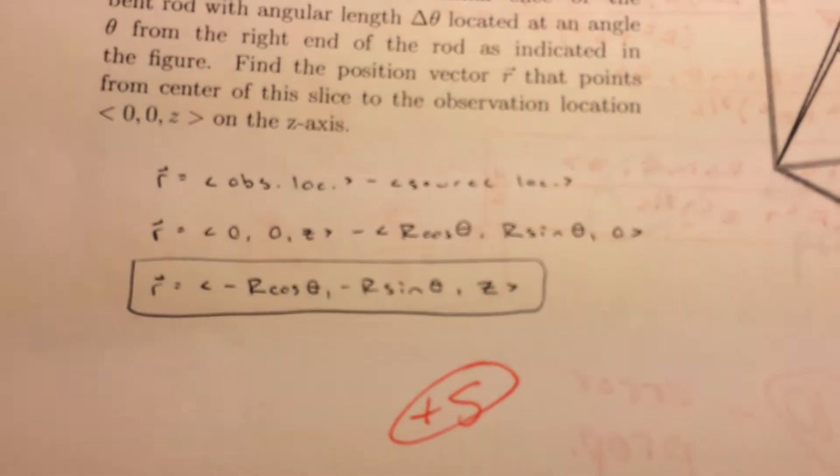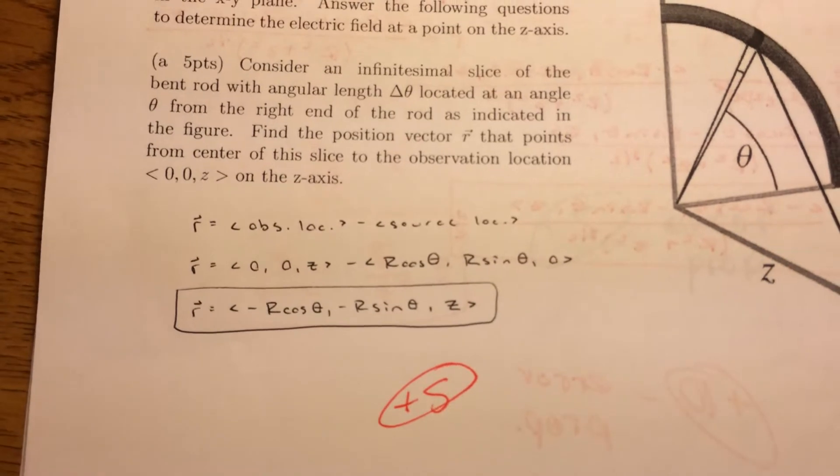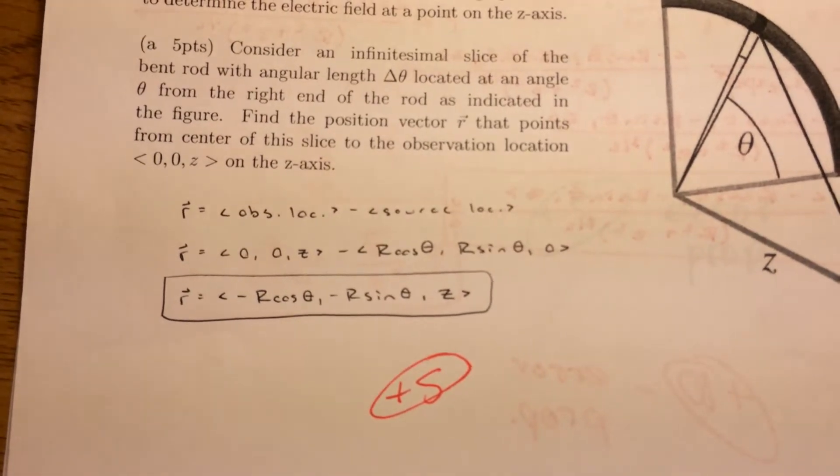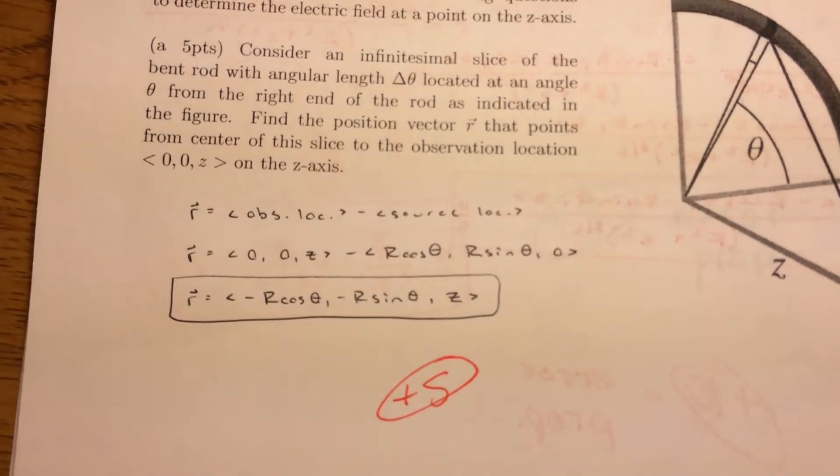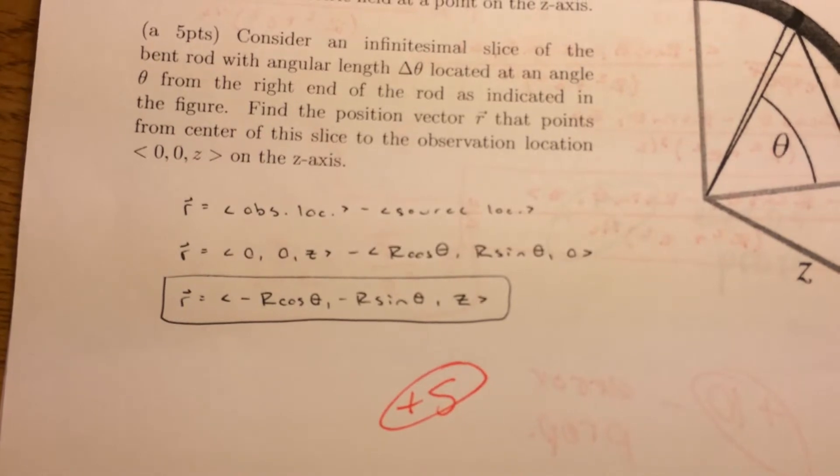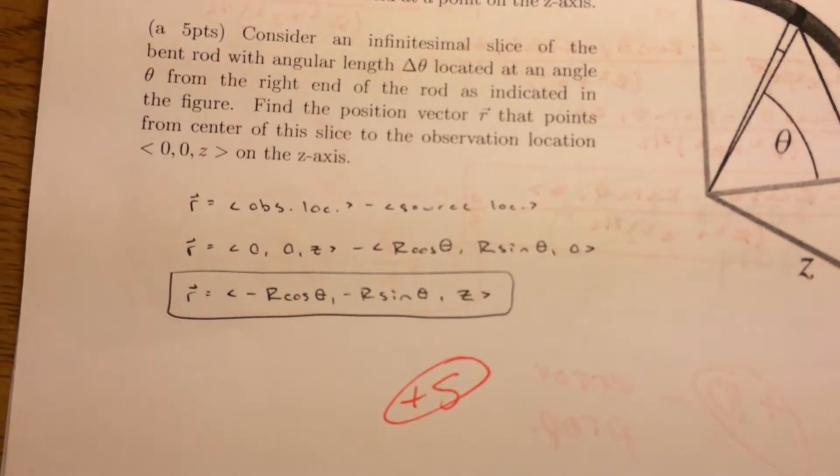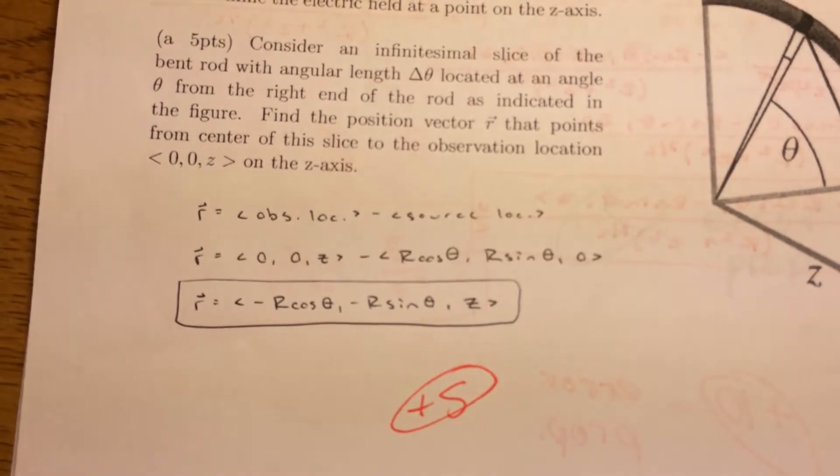All I did right here is create this vector R that is the vector from the origin to where we're getting this electric field from. How you find that vector is you do the observation location, which is the origin, minus the source location, which is the part of the rod.